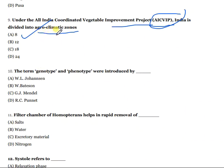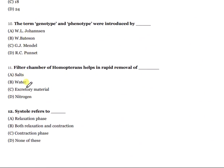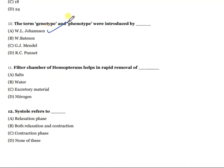Question 10: The terms 'genotype' and 'phenotype' were introduced by which scientist? The right answer is option A — W. L. Johannsen.